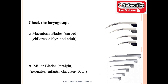Check the functionality of the laryngoscope: verify that the blade slides properly into the handle and that the lighting is functional. There are two main blade types: the Macintosh blade, a curved blade commonly used for adults, and the Miller blade, a straight blade used for the pediatric age group.